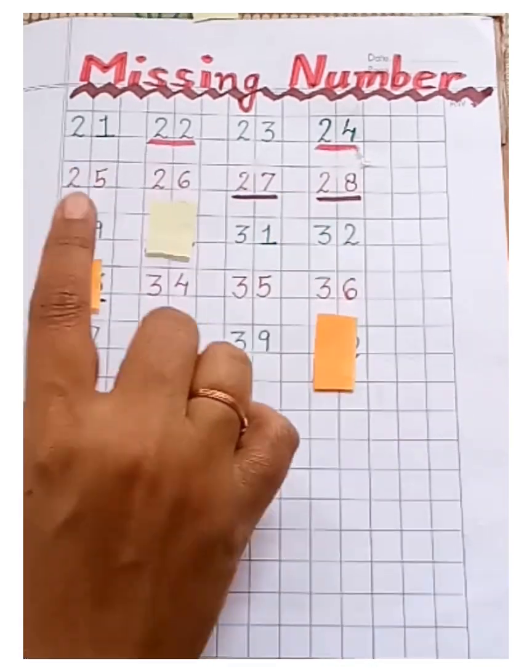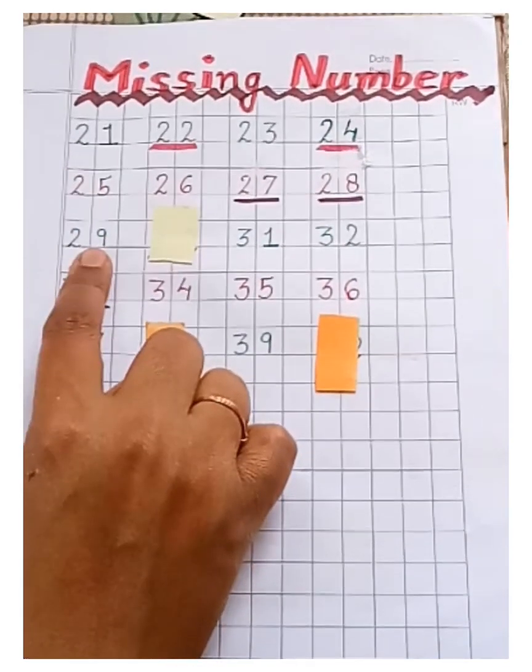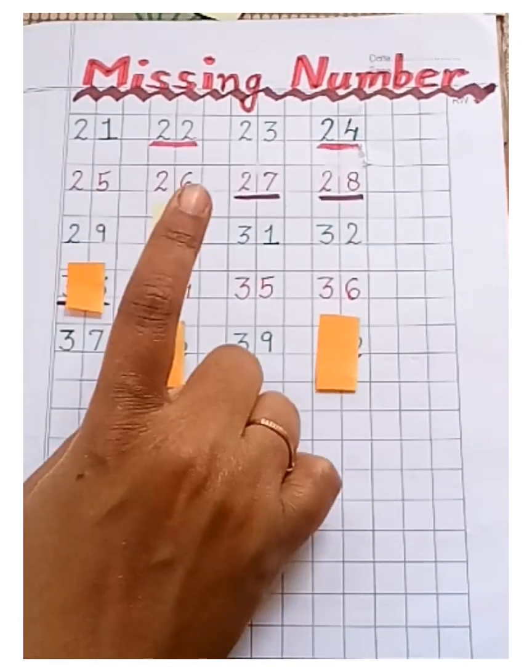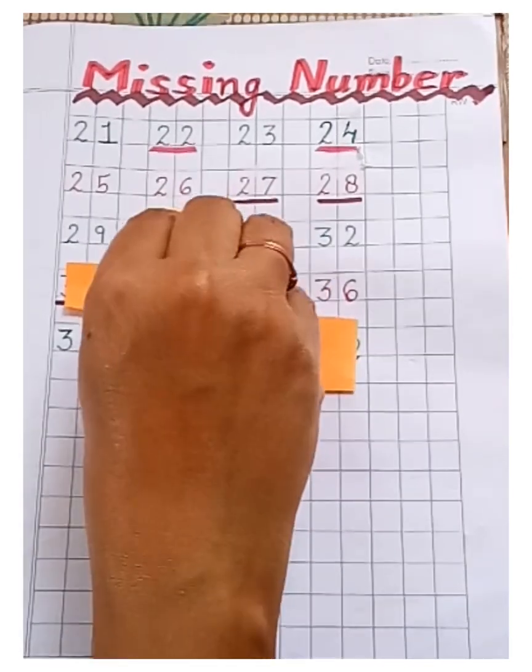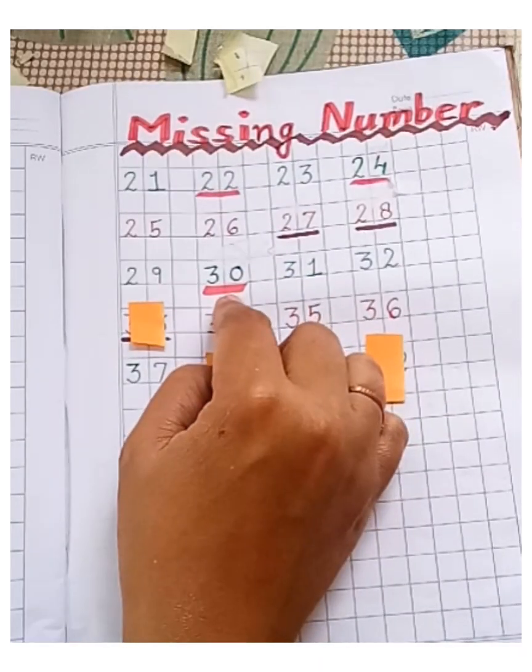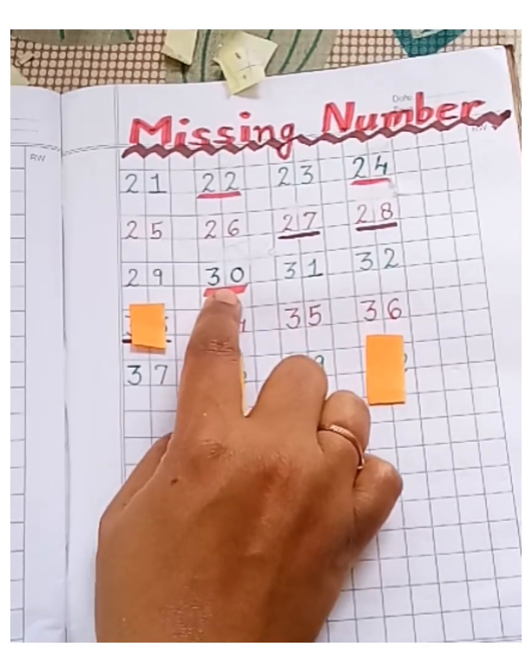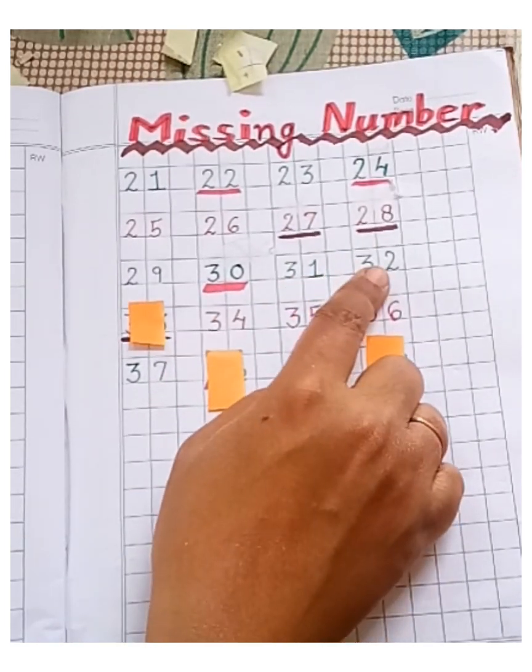Next number is 29. Oh, again one number is missing. Let's find out. It's 30. Then, 31, 32.